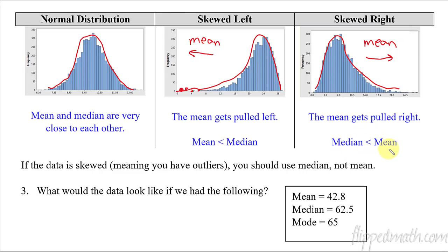These are things you have to be able to identify in our practice today, as well as on your master check. If the data is skewed, meaning you have outliers, you want to use median, not mean. We kind of talked about that. We hammered that pretty hard.